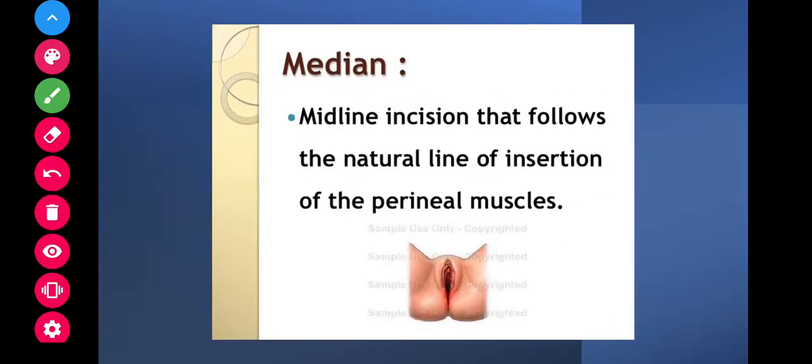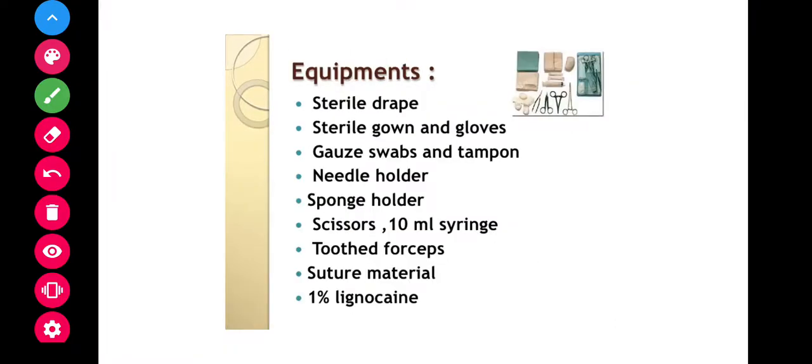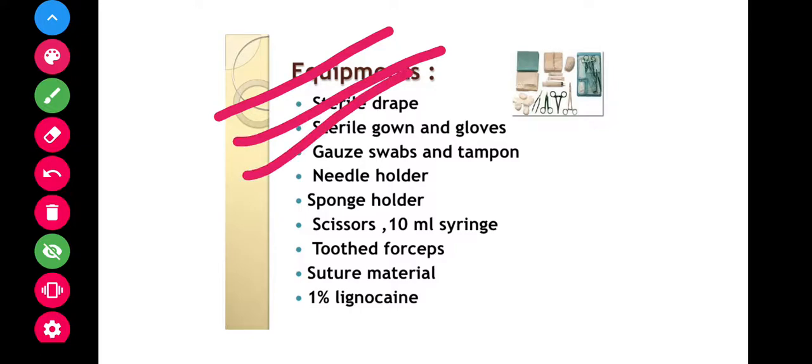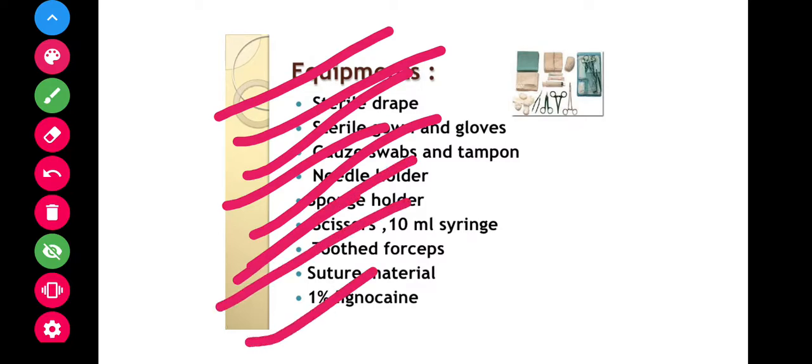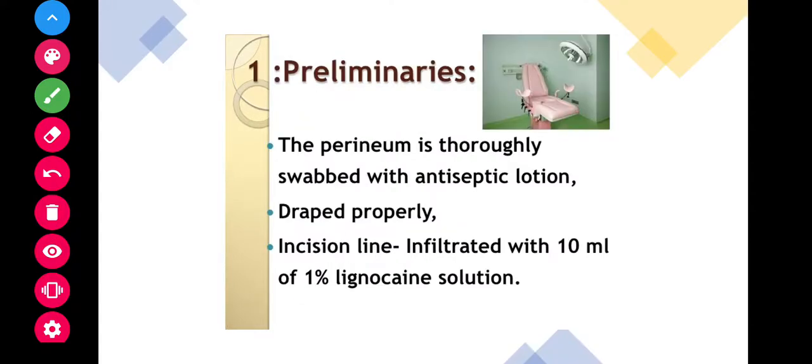Let us see the articles or equipment which are needed for this episiotomy: sterile drape, sterile gown and gloves, gauze swabs and tampon, needle holder, sponge holder, scissors, 10 ml syringe, toothed forceps, suture material, and 1% lignocaine are required. Preliminary, the perineum is thoroughly swabbed with antiseptic lotion and draped properly. The incision line is infiltrated with 10 ml of 1% lignocaine.